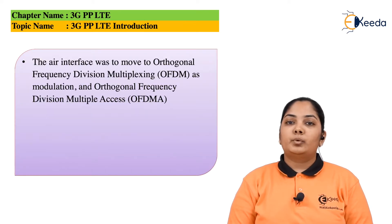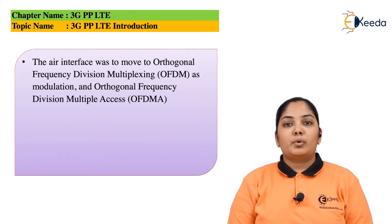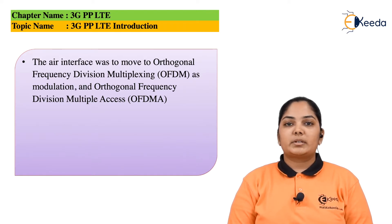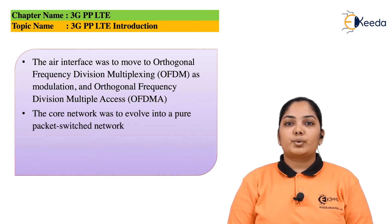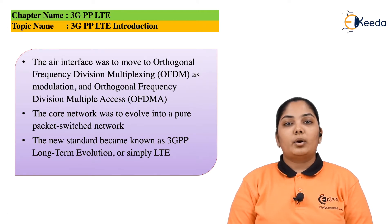The air interface then moved on to OFDM, which is orthogonal frequency division multiplexing, as a modulation technique, and orthogonal frequency division multiple access as an accessing technique. Multiple access is where multiple users are able to access the same system. The core network was to evolve into a pure packet switched network. This new standard became known as 3GPP Long Term Evolution, or simply LTE.